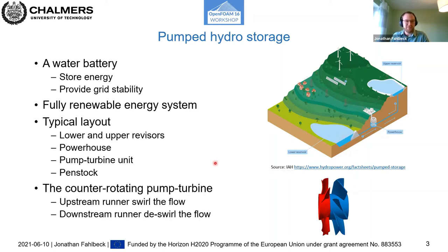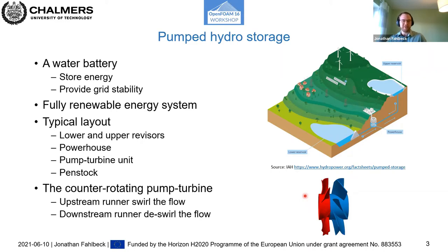The principle of the counter-rotating pump turbine is that the first runner rotates in one direction, swirling the flow and creating angular momentum. The downstream runner then makes use of that angular momentum and de-swirls the flow as it rotates in the opposite direction.